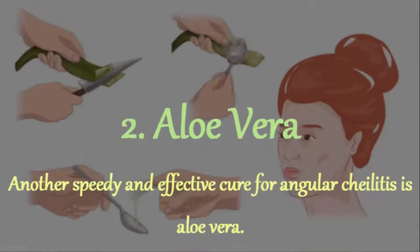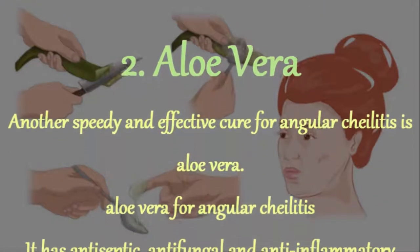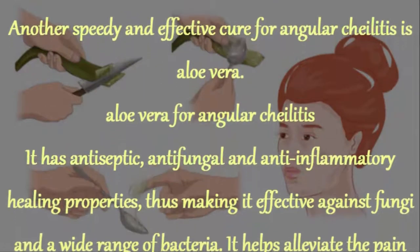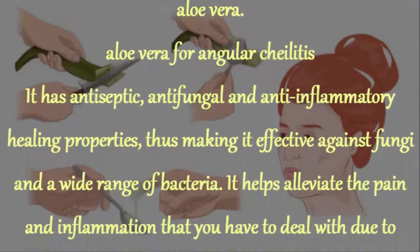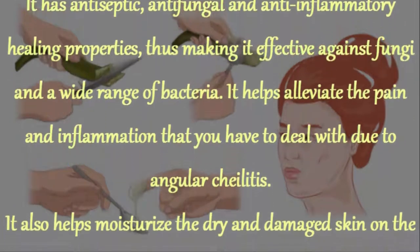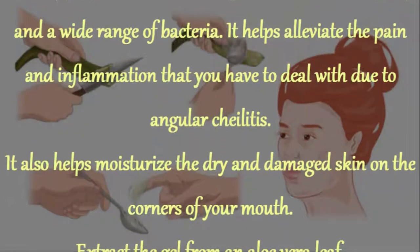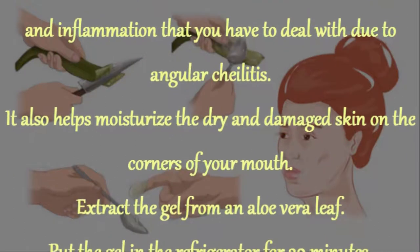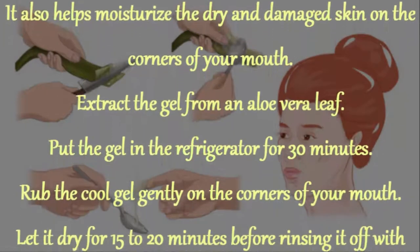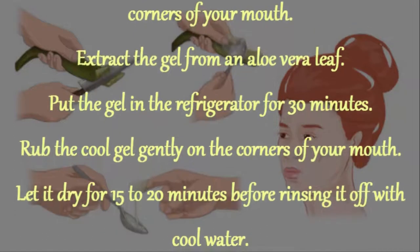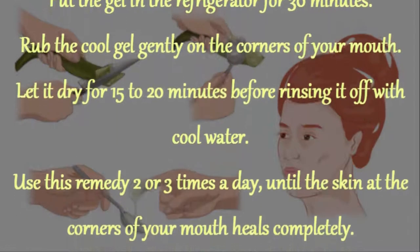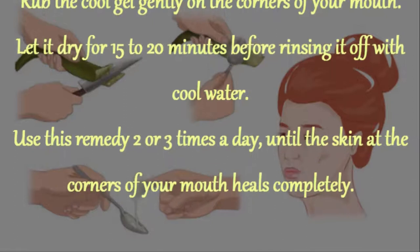2. Aloe Vera. Another speedy and effective cure for angular cheilitis is aloe vera. It has antiseptic, antifungal, and anti-inflammatory healing properties, making it effective against fungi and a wide range of bacteria. It helps alleviate pain and inflammation and also moisturizes the dry and damaged skin on the corners of your mouth. Extract gel from an aloe vera leaf, refrigerate for 30 minutes, then rub the cool gel gently on the corners of your mouth. Let it dry for 15 to 20 minutes before rinsing with cool water. Use 2 or 3 times a day until completely healed.